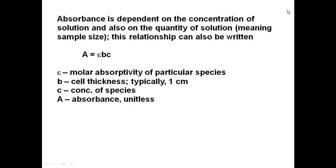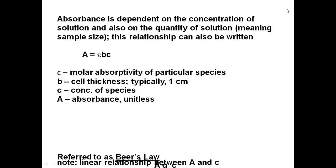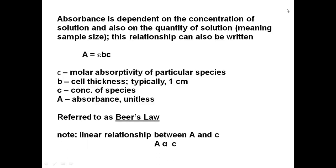This equation, A equals epsilon BC, is referred to as Beer's Law. The important thing to realize is that absorbance and concentration are linear — there's a linear relationship between the two. If you double the concentration, the absorbance should double. If you triple the concentration, the absorbance should triple. We're more concerned about this relationship between concentration and absorbance to determine the concentration of our unknowns.